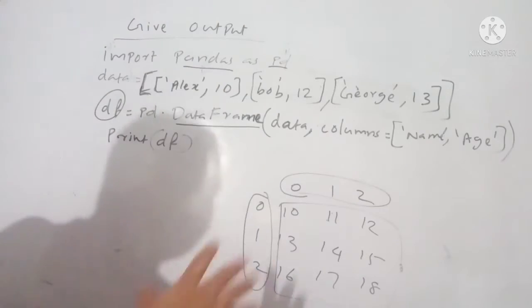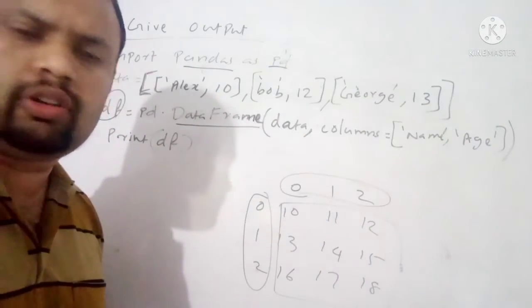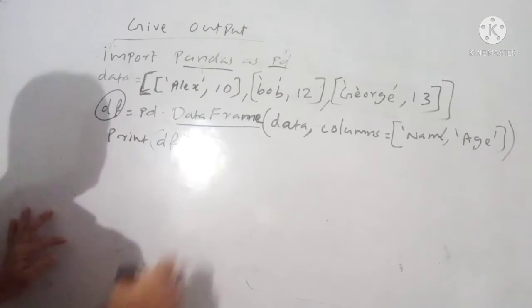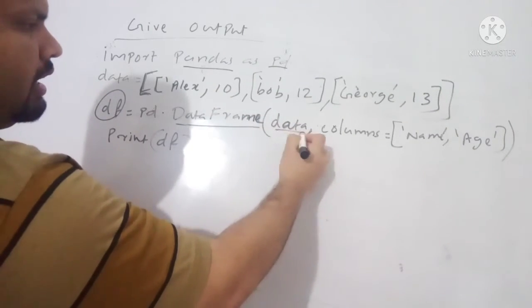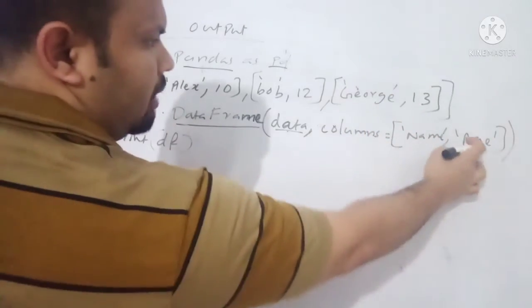So here we are going to discuss how we can solve this type of question. This is a very important two mark question from Python pandas. So how we will write the output here? We are creating a data frame by using this value data. What is data? Columns, these are the column name, name and age.